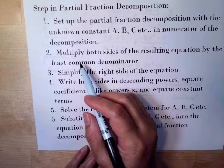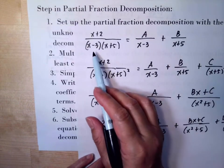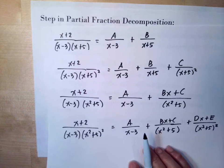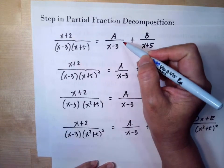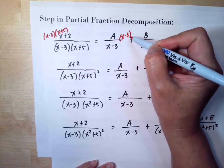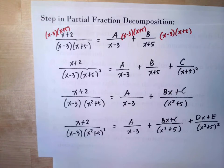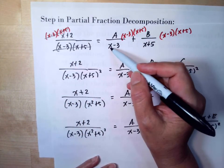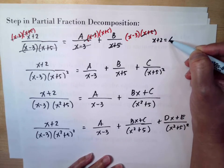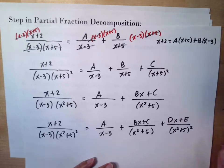Step 2: multiply both sides of the resulting equation by the least common denominator, which is the denominator of the original simplified rational expression — here (x minus 3)(x plus 5). Multiply every term on both sides by (x minus 3)(x plus 5), which cancels the denominators, giving you x plus 2 equals A times (x plus 5) plus B times (x minus 3).